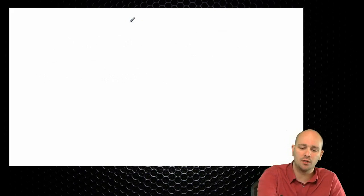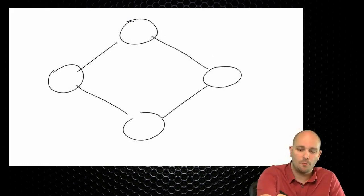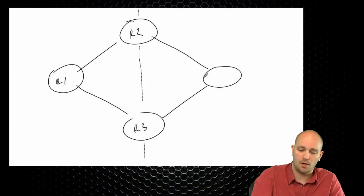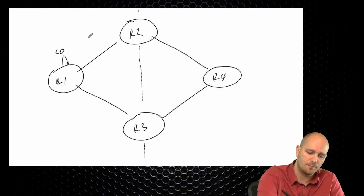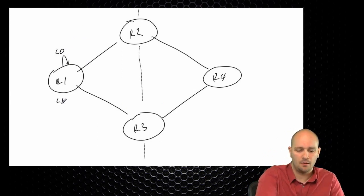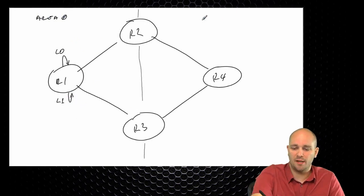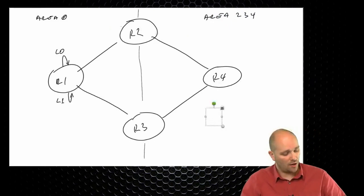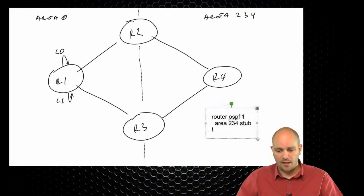To illustrate this, consider a network with four routers R1, R2, R3, and R4 interconnected, where R2 and R3 are ABRs. R1 has two loopbacks — loopback 0 and loopback 1. This is area 0 and area 234. The configuration on R4 uses 'router OSPF 1' with 'area 234 stub', along with network statements assumed to be in place.